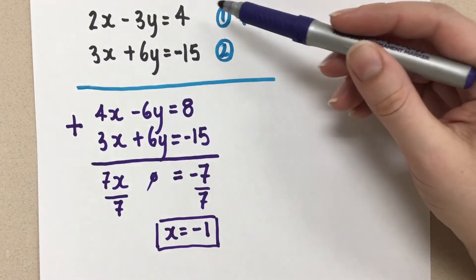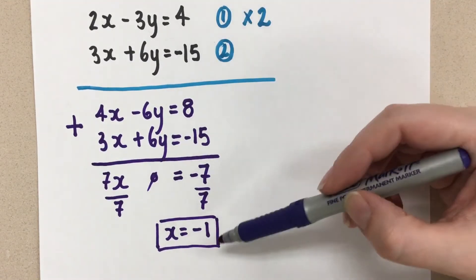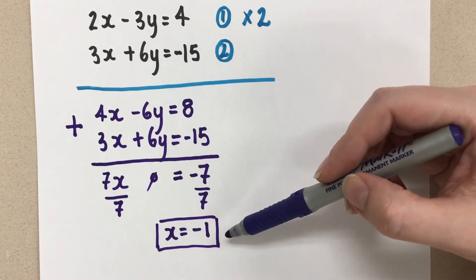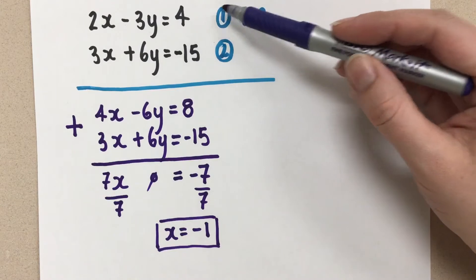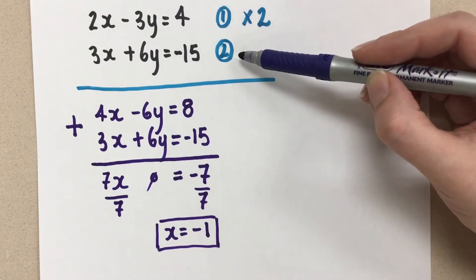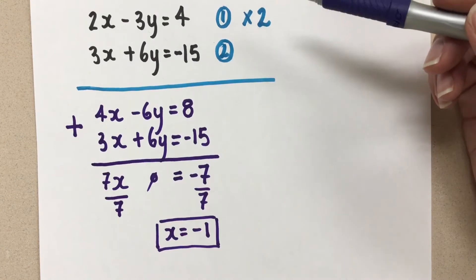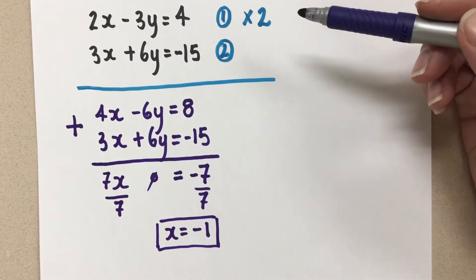you can go back to your equations. Since we have 2 here, this negative 1 will give us the corresponding y coordinate, whether we use the first equation or the second equation. It won't matter. So I suggest you choose the one that looks easiest to you to solve for your y.